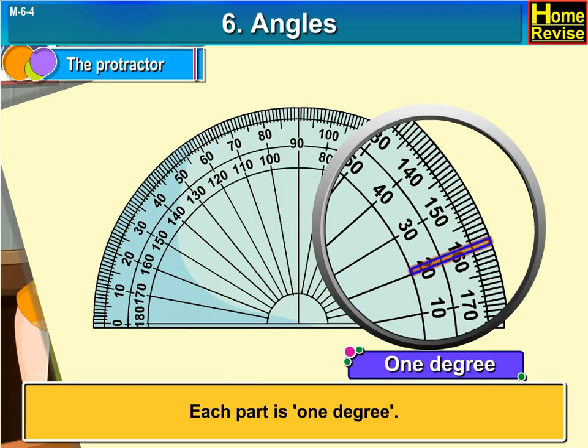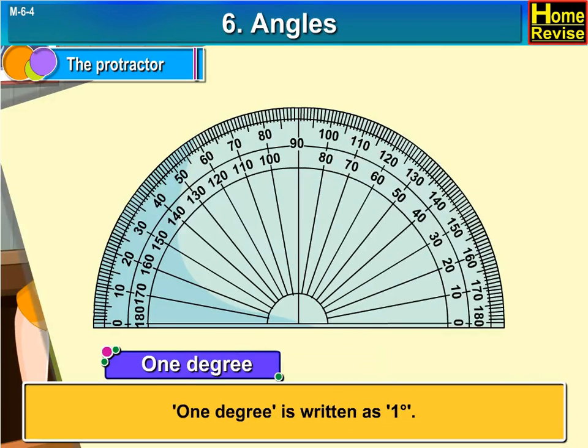Each part is one degree. One degree is written as 1° with a small zero above it. This sign shows degree.